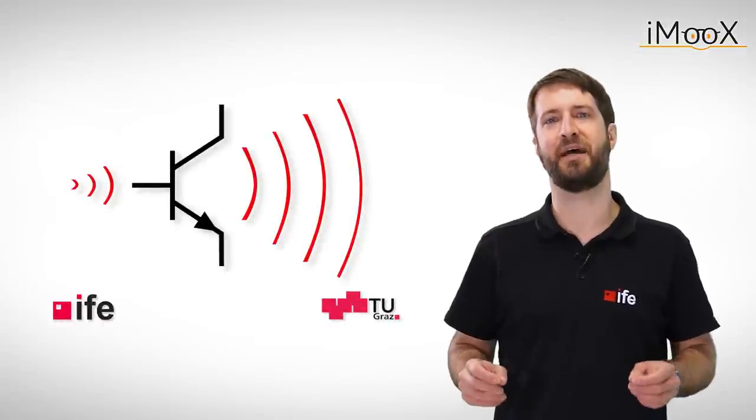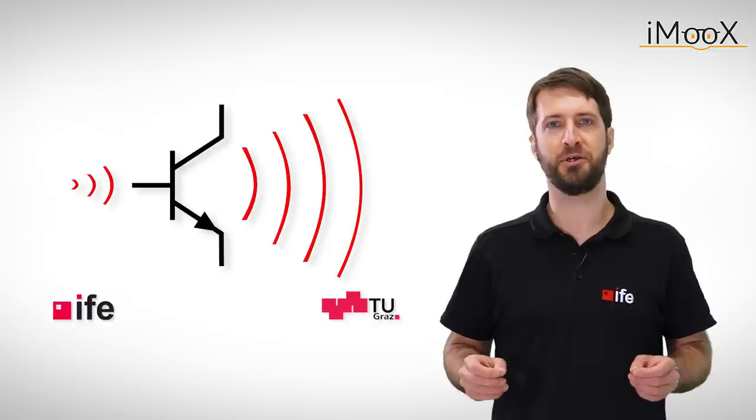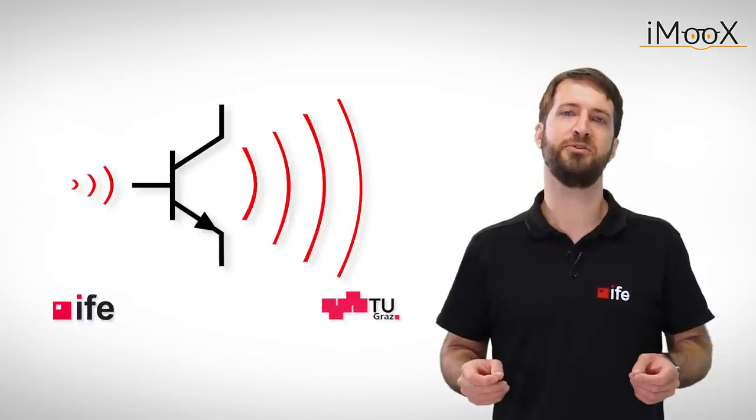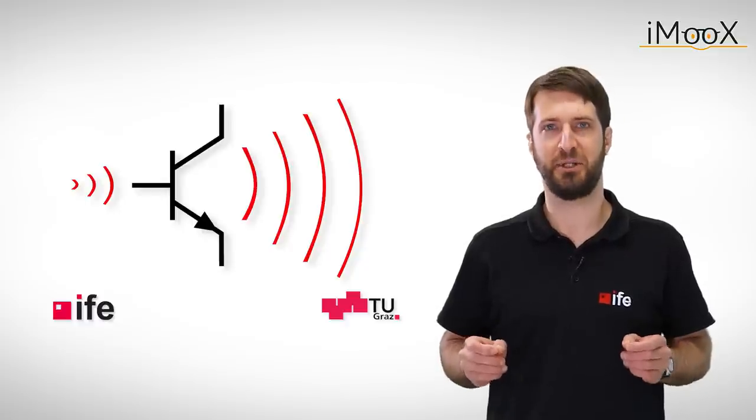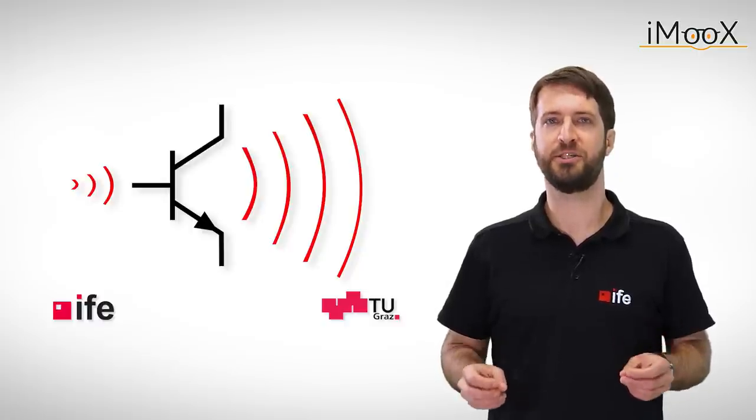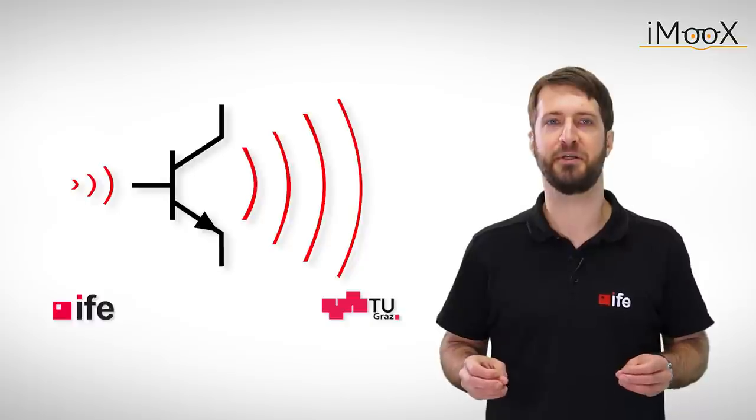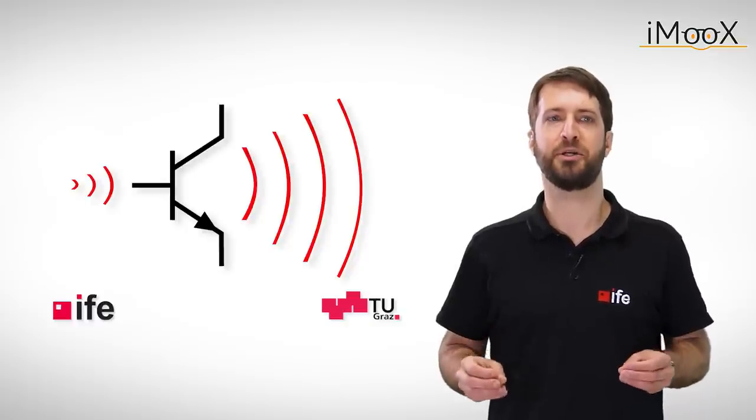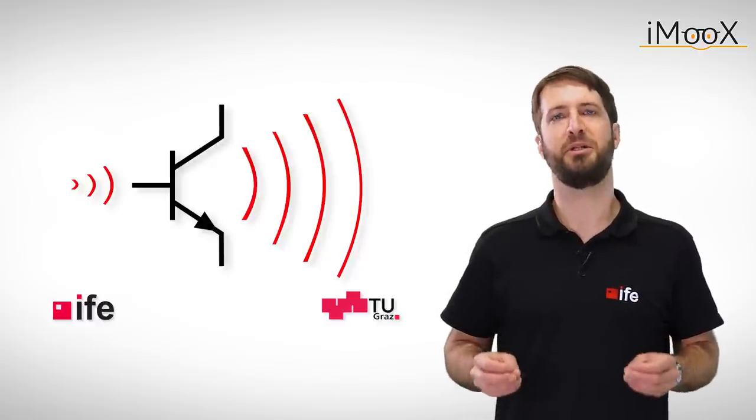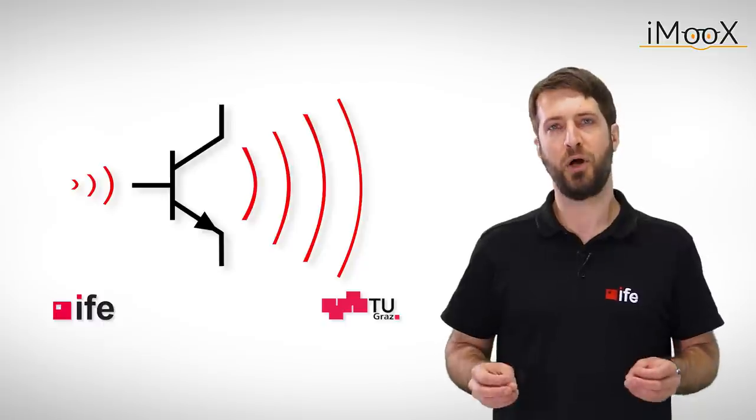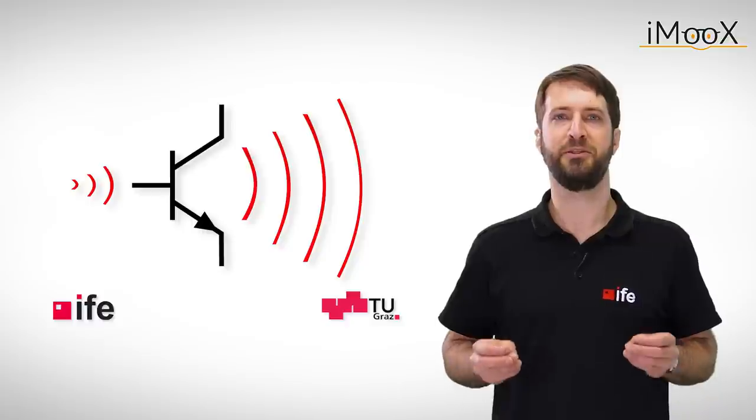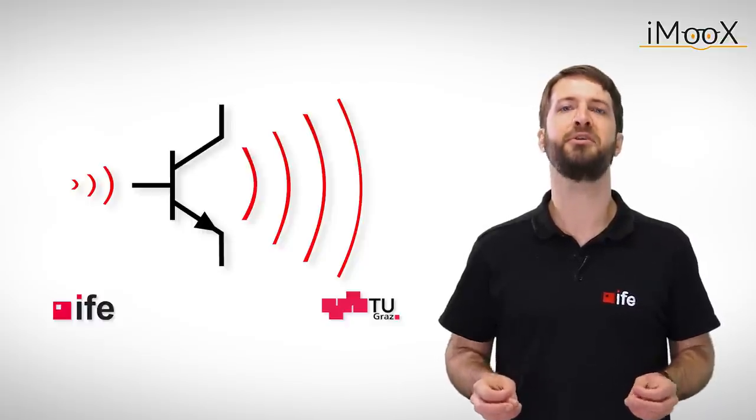This basic design example of an emitter follower should give you a first clue how transistor amplifiers work. The emitter follower can be used in a variety of different applications, like current sources, voltage regulators or in the output stage of class B or class AB amplifiers. You can find some example circuits in the description of the video. The emitter follower is most commonly used as impedance transformer. The low output impedance of the emitter follower allows driving high loads, which might be too demanding for a signal source to drive on its own.